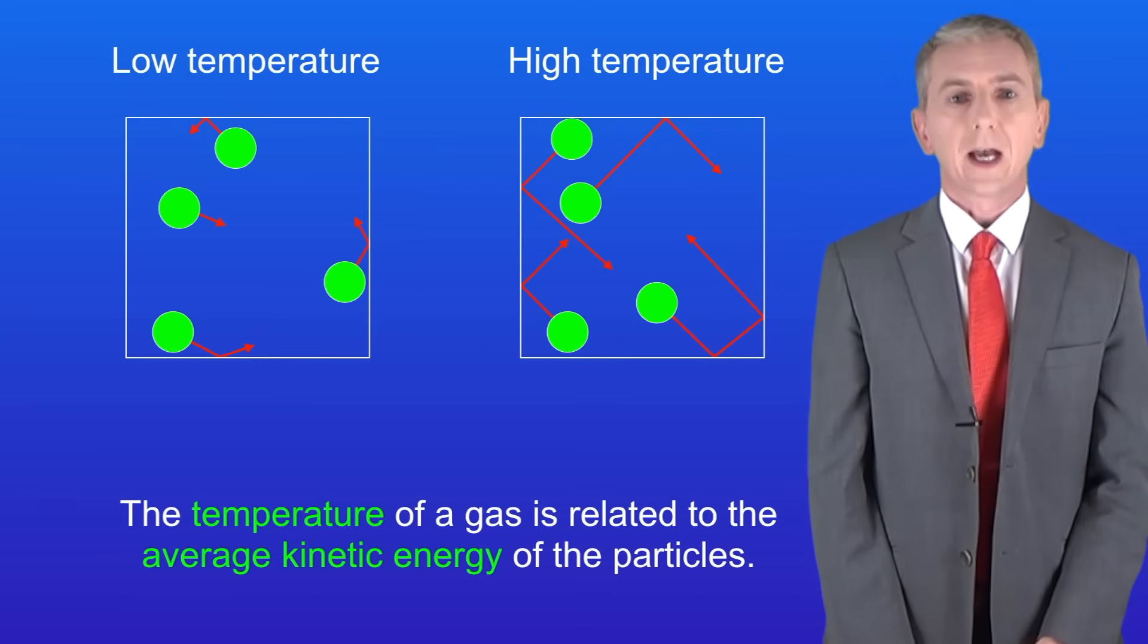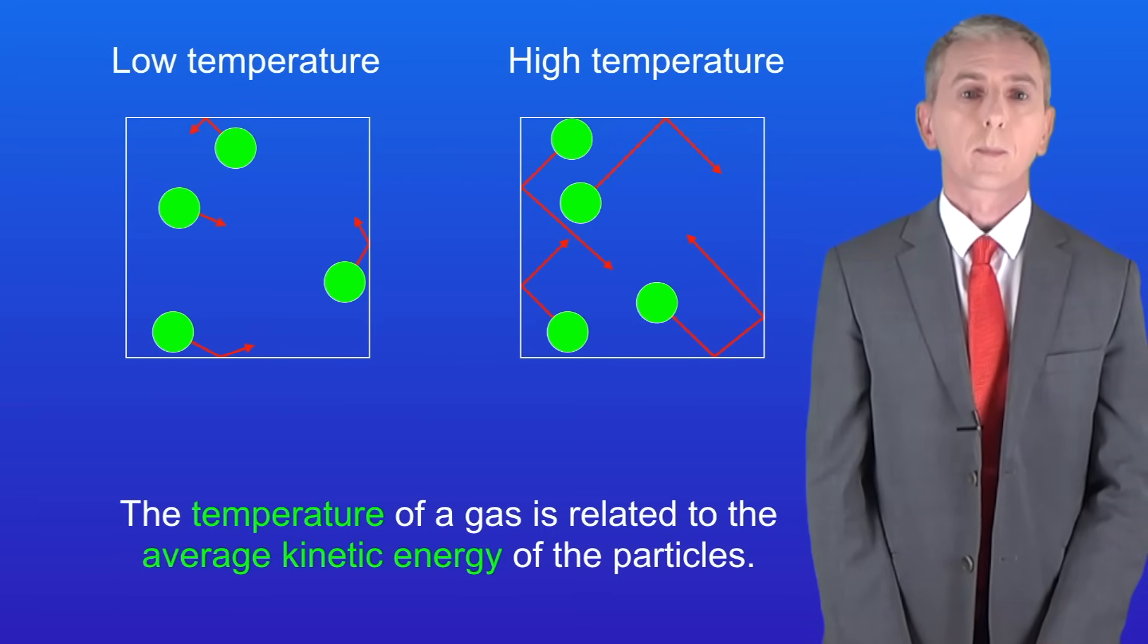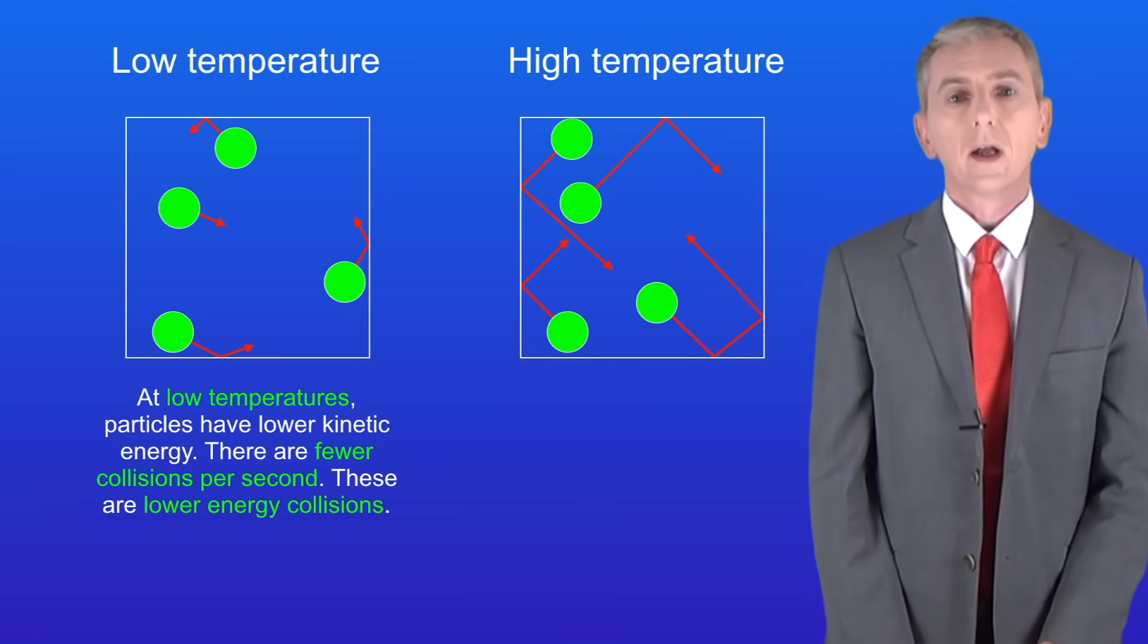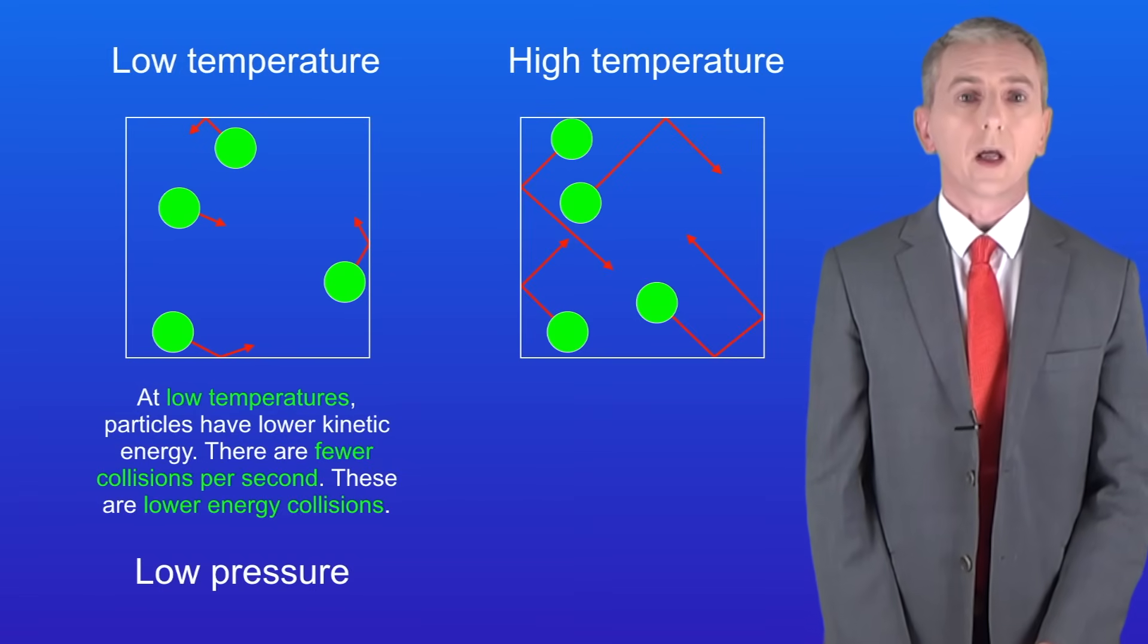Now the first key idea you have to get is that the temperature of a gas is related to the average kinetic energy of the particles. At low temperatures particles have lower kinetic energy. This means there are fewer collisions per second and these are lower energy collisions. This means that at lower temperatures the gas pressure is relatively low.